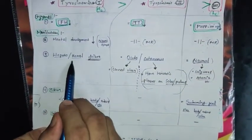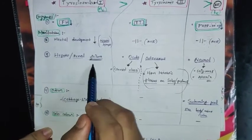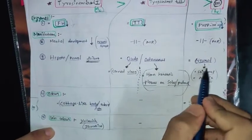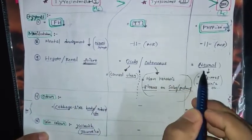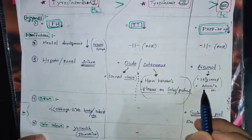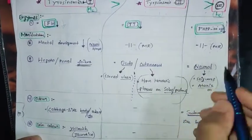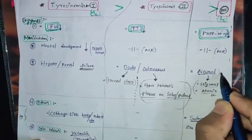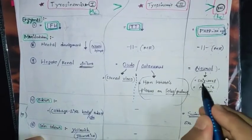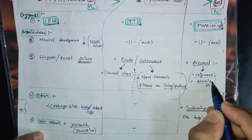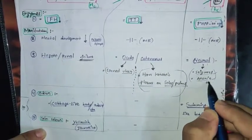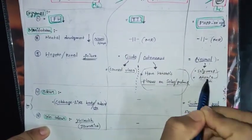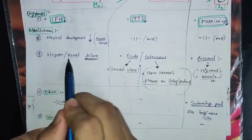Beyond mental retardation: Tyrosinemia type 1 presents with hepatorenal failure (both kidney and liver failure). Type 3 presents with additional neural symptoms like seizures and attacks — remember to note seizures and attacks for type 3. The common feature (mental retardation) is shared by all three, but seizures and attacks are extra for type 3, and hepatorenal failure is specific to type 1.